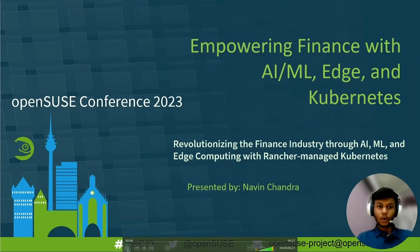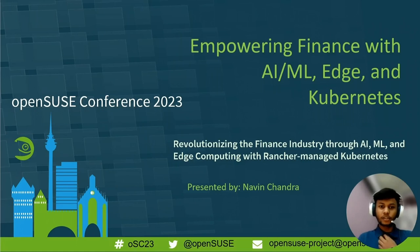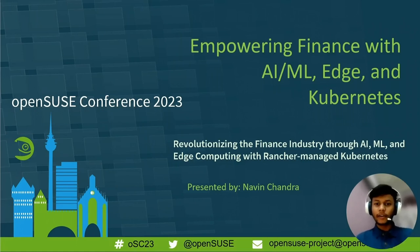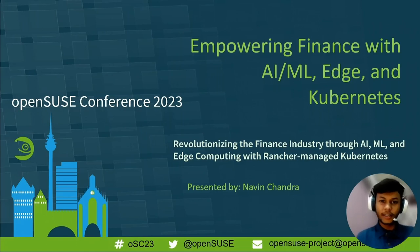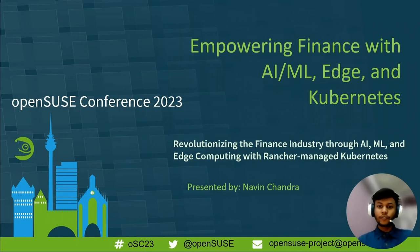Welcome everyone to the OpenCity Conference 2023. Today I will be delivering a lightning talk on how AI, ML, edge computing and Kubernetes are helping shape the financial sector. We will also see how Rancher has helped us simplify this process.